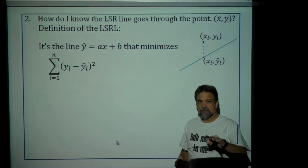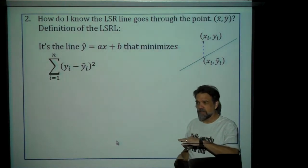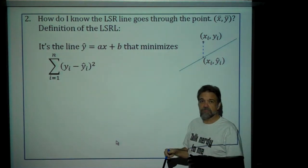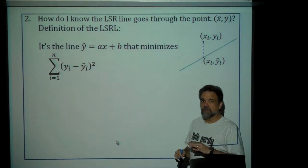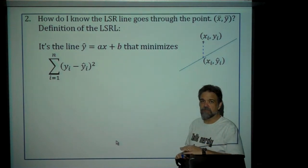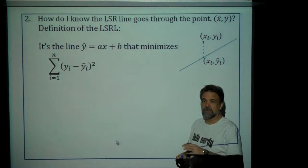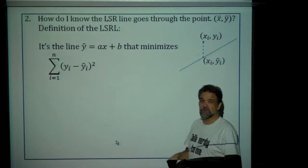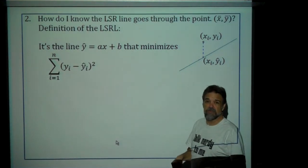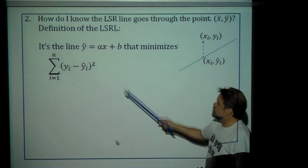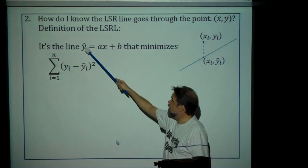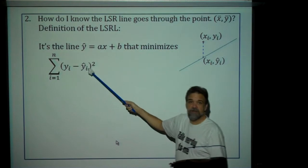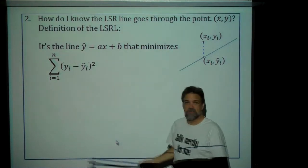I know that the AP says b-naught plus b-one times x. Those are just two different names we're using for slope and y-intercept. I want to use a for slope and b for y-intercept, so please just humor me during this video. So it's this line, y-hat equals ax plus b, that minimizes the sum of the squared residuals.